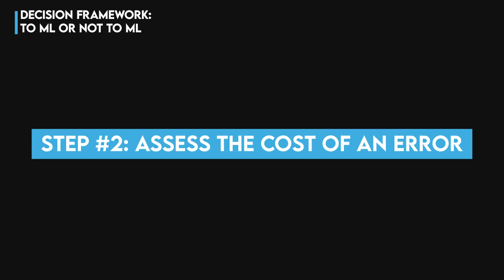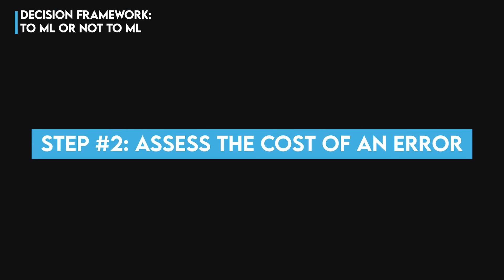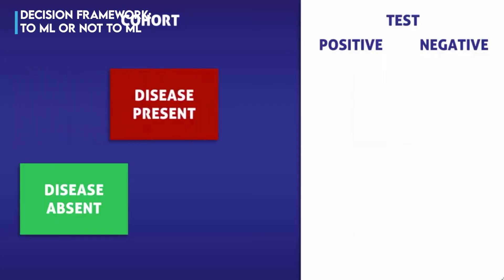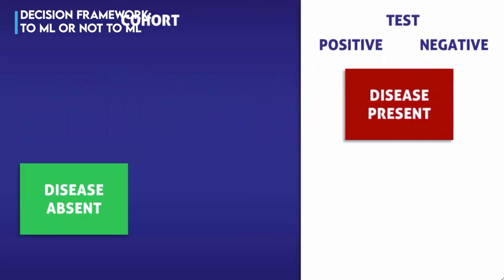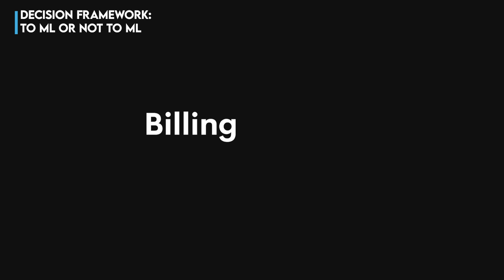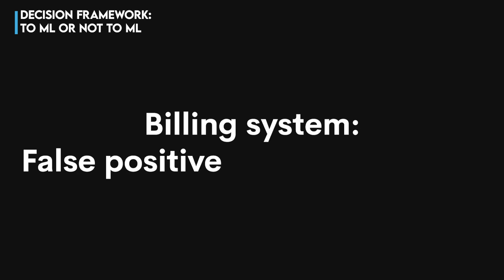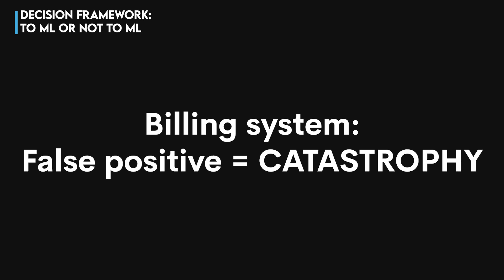Step 2: assess the cost of an error. Ask the question: what is the business cost of a false positive versus a false negative? For a billing system, a false positive — an overcharge — is catastrophic and can destroy user trust.